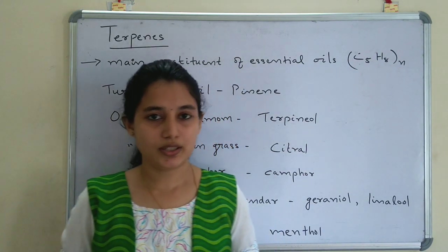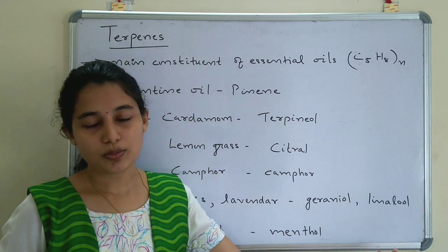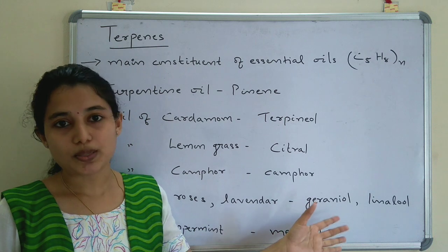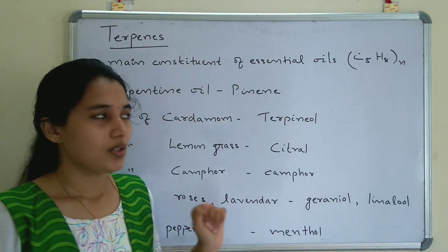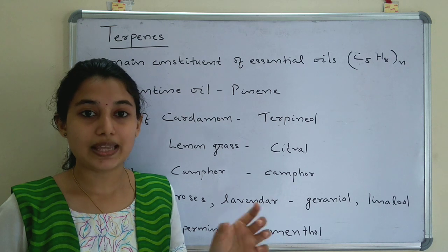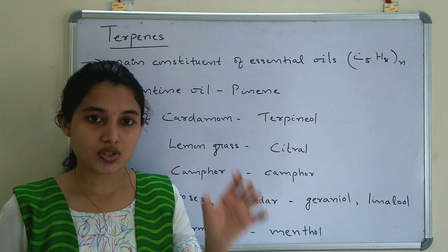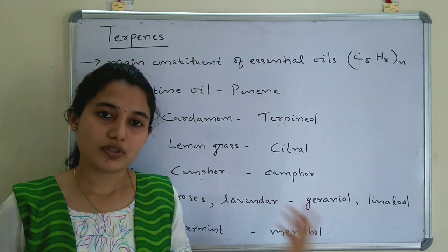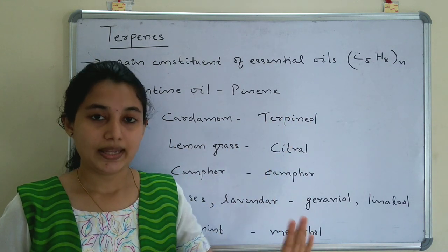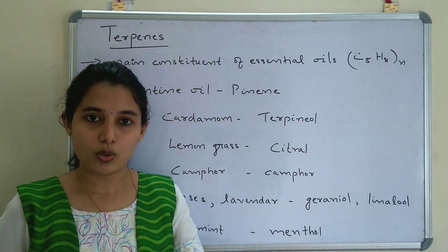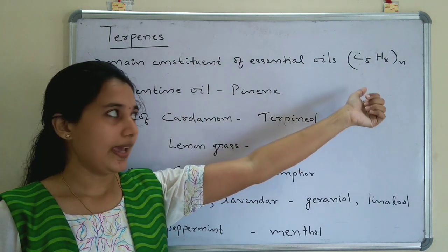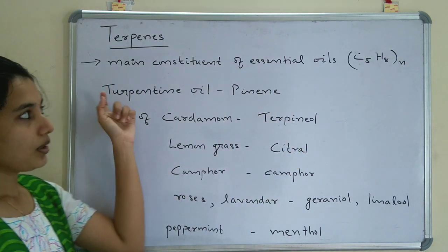Today we will discuss terpenes and terpenoids, starting the natural products topic. This explanation is specifically for the scientific officer exam and is sufficient for that exam. Terpene is the major constituent of essential oils. The difference between terpene and terpenoids is that in terpene there is no ketone, aldehyde, or OH functional group, whereas in terpenoid oil these functional groups are present.